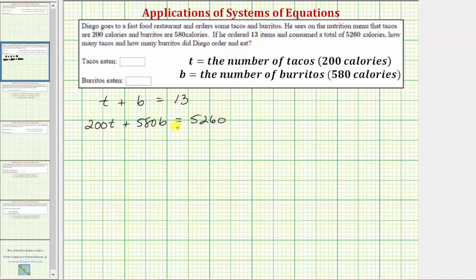And now to determine the number of tacos and burritos, we need to solve the system of equations. So we need to decide whether we want to solve the system using substitution or elimination. Because we can easily solve this first equation for t or b, let's use the method of substitution. Let's solve this first equation for t by subtracting b on both sides of the equation. That would give us the equation t equals 13 minus b.